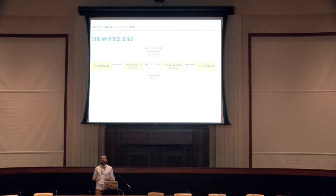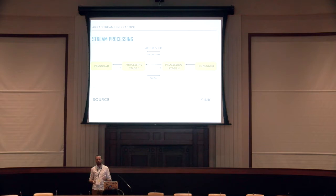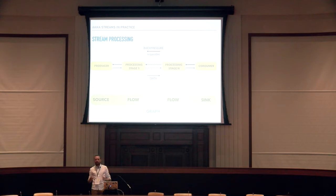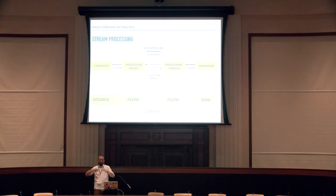This way, when the consumer says how much data it's able to process at a given point in time, there is no danger it will be flooded, because the producer is not allowed to produce more data than the consumer is actually able to consume. This is the general naming for a stream processing architecture. Akka Streams has its own names: the producer is called the source, the consumer is called the sink, the intermediate processing stages are called flows. All of them together form something called a graph.